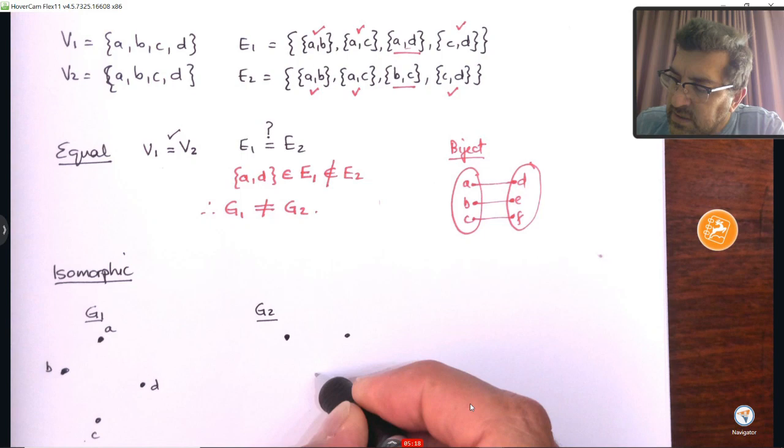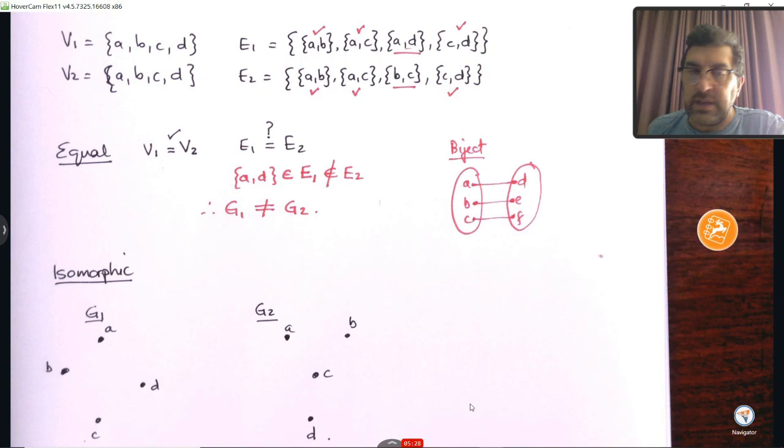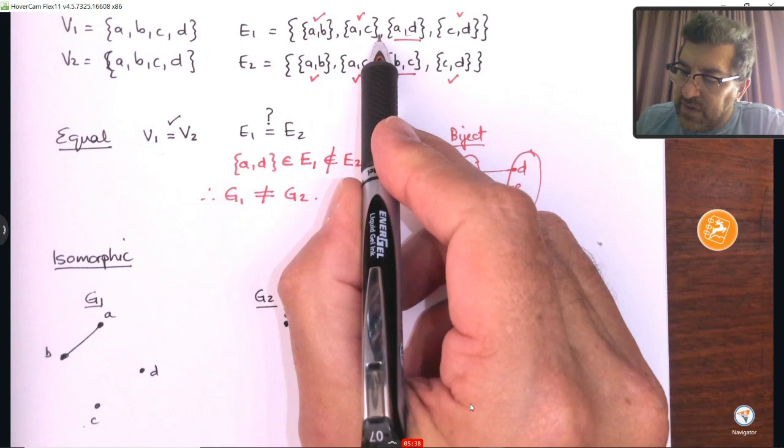So, for graph 1 and for graph 2 over here, I'm going to draw them differently. Let's do that. And let's just say this is A, that is B, this is C, this is D. Okay. So, the vertex sets are in there. Now, we need to draw the edges. Graph 1 has edge A,B. Graph 2 has edge A,B. Perfect.